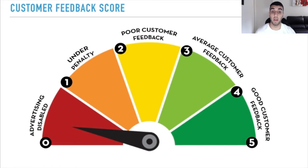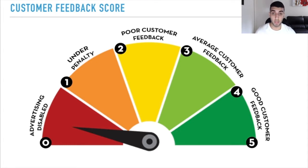Here's a chart that explains this very well. A score from 4 to 5 is good customer feedback. A score from 3 to 4 is average customer feedback. A score from 2 to 3 is poor customer feedback. A score of 1 to 2 means your advertising is under penalty. And a score from 0 to 1 will have your advertising disabled.